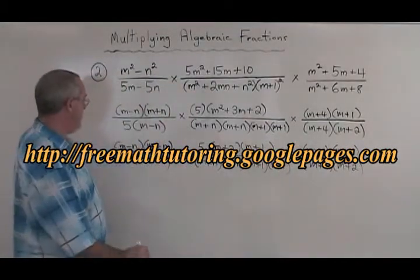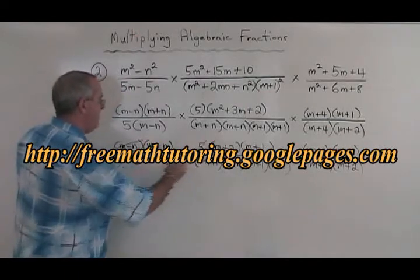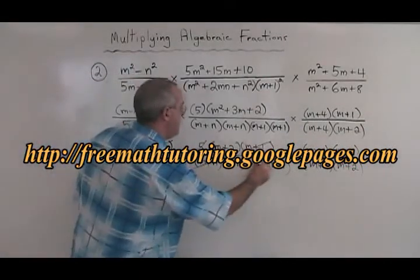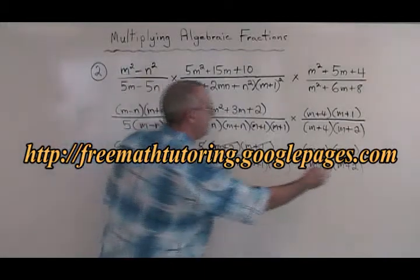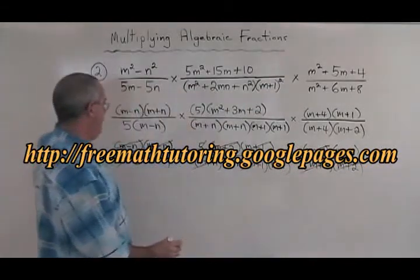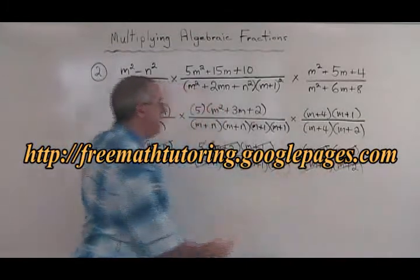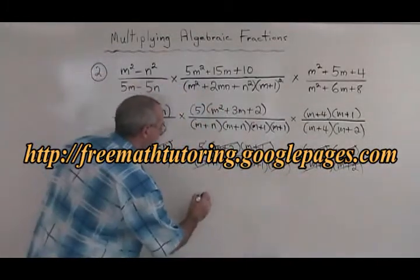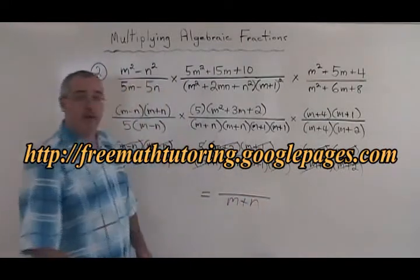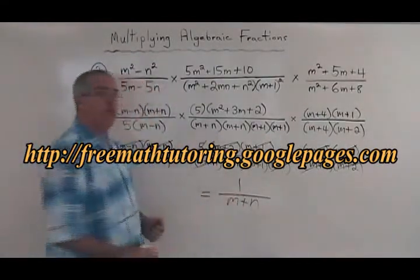Now I'm ready to do my canceling. I cancel (m minus n) with (m minus n), 5 with 5, (m plus n) with (m plus n), (m plus 1) with (m plus 1), (m plus 2) with (m plus 2), (m plus 4) with (m plus 4), and (m plus 1) with (m plus 1). All that's left is one (m plus n), and remember it is in the denominator. There's nothing left in the numerator, which means there's a 1 in the numerator. The final answer is 1 over (m plus n), and we are finished.